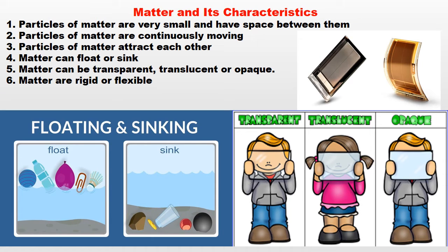Matter and its characteristics. Particles of matter are very small and have space between them. Particles of matter are continuously moving. Particles of matter attract each other. Matter can float or sink based on its density. Matter can be transparent, translucent, or opaque. Matter can be rigid or flexible.